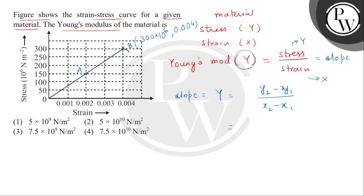We can put it here. This is 300 minus 150, and here we can get 10 to the power 6 common, divided by 0.004 minus 0.002.